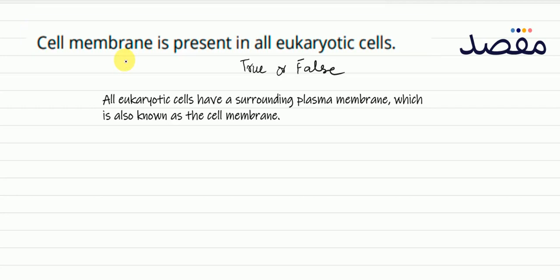There is a complete plasma membrane, because a complete nucleus — a true nucleus — is present. So you can see that all eukaryotic cells have a surrounding plasma membrane, which is also known as the cell membrane.